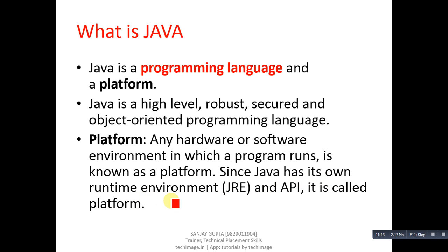Since Java has its own runtime environment, which is called JRE — Java Runtime Environment — and API, which means Application Programmer Interface. APIs are some predefined codes which you can directly use for your programming purposes. So because Java has its own JRE and API, that's why it is called a platform.